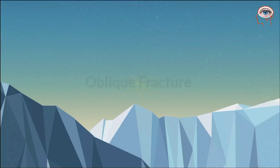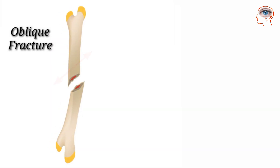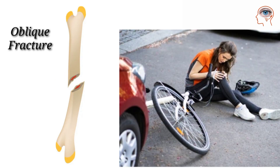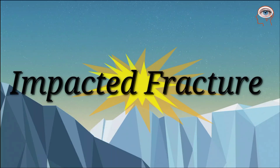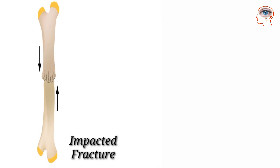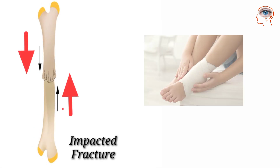Oblique fracture: when the break is diagonal across the bone, this is called an oblique fracture. This fracture results from a sharp blow due to a fall or other trauma.